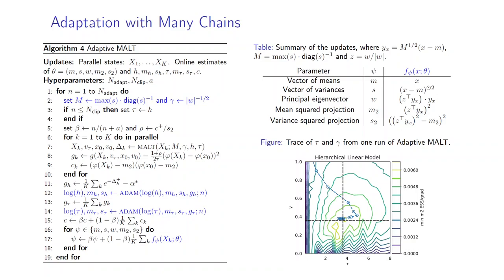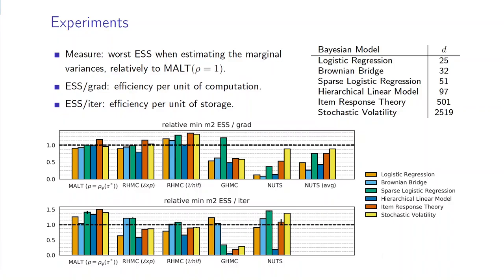On the right-hand side, we can see an example trace of τ and γ from one run of this adaptive MALT algorithm, and we can see that it converges to a near-optimal solution with respect to the worst ESS per gradient evaluation.